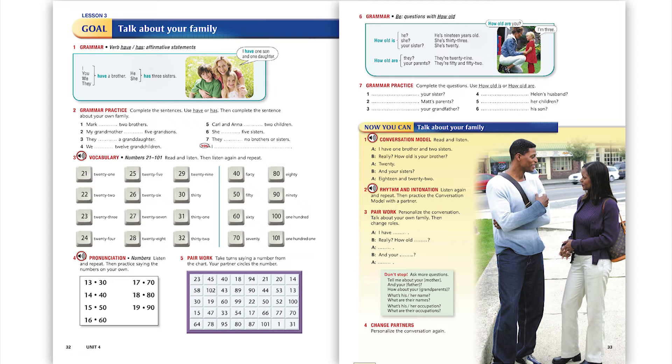I have one brother and two sisters. Really? How old is your brother? Twenty. And your sisters? Eighteen and twenty-two.